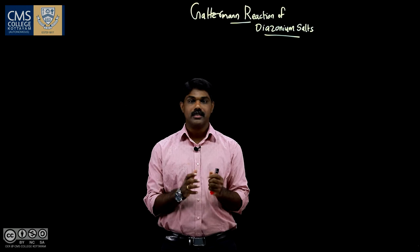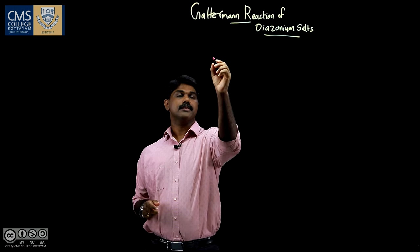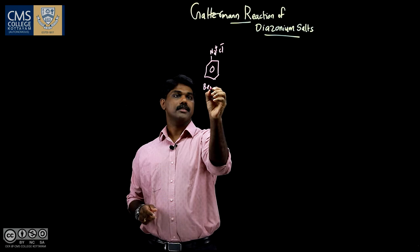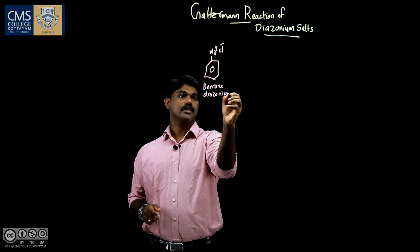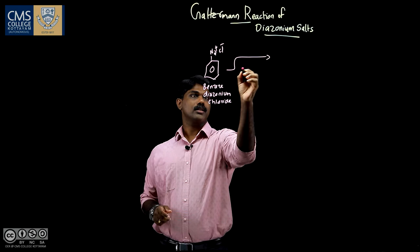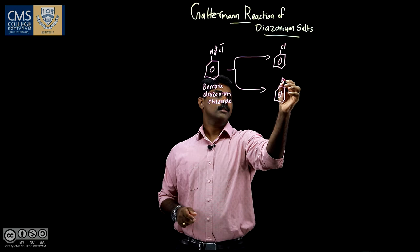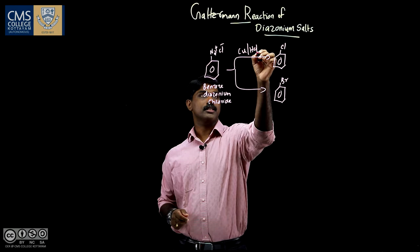Let us write the reaction equation. This is N2+ Cl- and this is benzene diazonium chloride. This can be converted to chlorobenzene or to bromobenzene by directly using copper powder along with HCl, and here copper powder along with HBr.